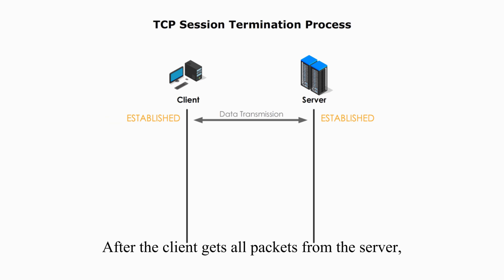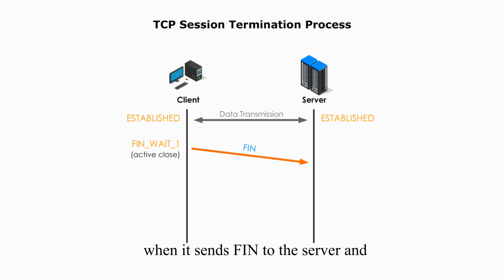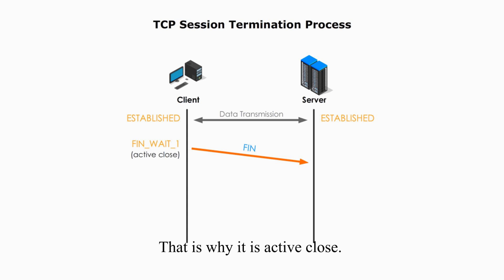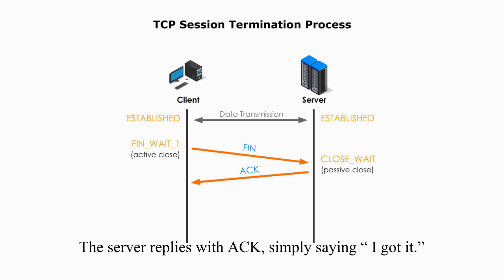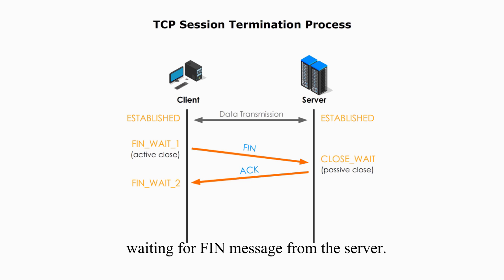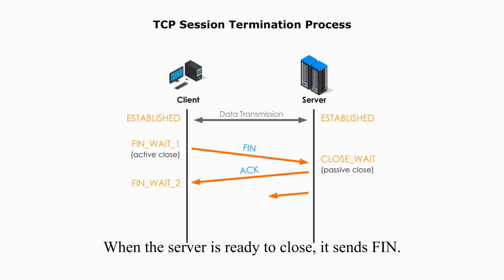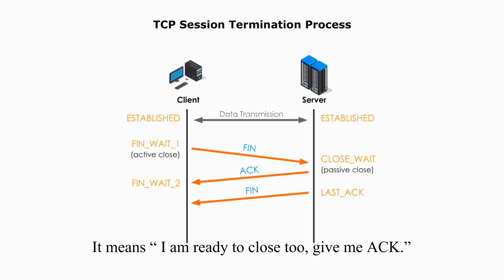After the client gets all packets from the server, a four-step procedure follows to close the session. The client enters the FIN-WAIT-1 state when it sends FIN to the server and waits for confirmation. The client initiates the close — that's why it is an active close. The server replies with ACK, simply saying, I got it. The client then enters the FIN-WAIT-2 state, waiting for a FIN message from the server. When the server is ready to close, it sends FIN, and the server enters the LAST-ACK state, meaning: I'm ready to close too, give me ACK for confirmation.